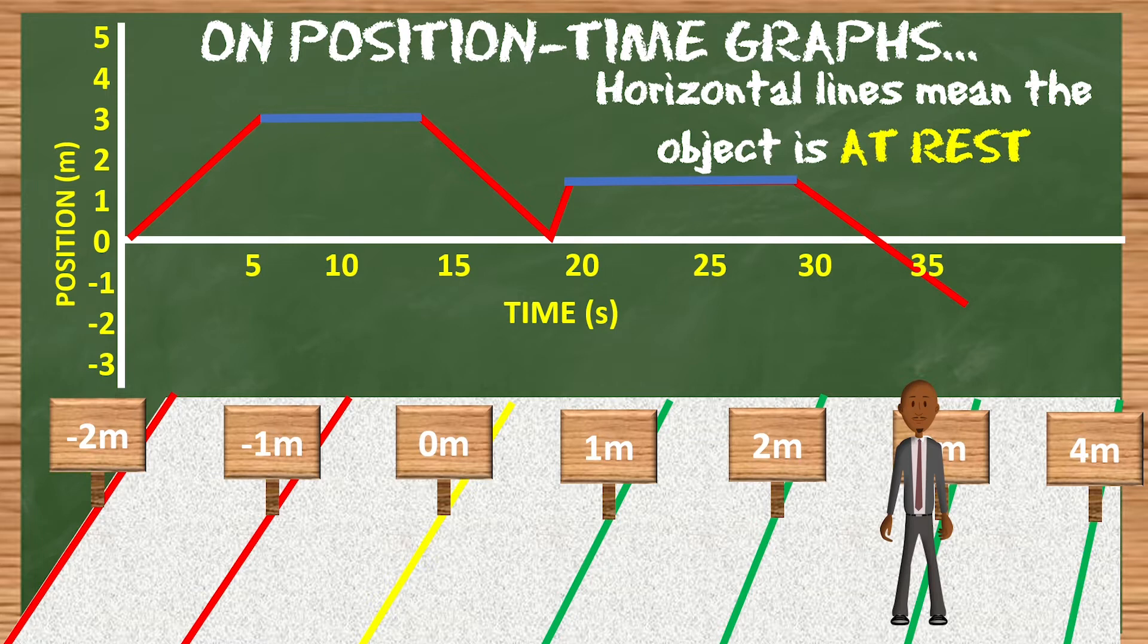So these downward lines must mean the object is going backwards. Absolutely. Let's look at another graph. Can you describe what this object is doing? Oh, so it's sitting at rest and then it moves backwards for some seconds and then...